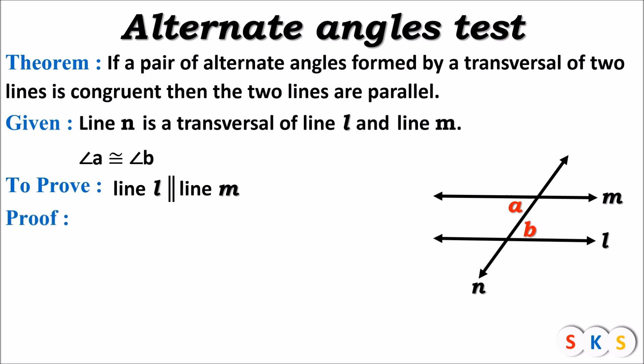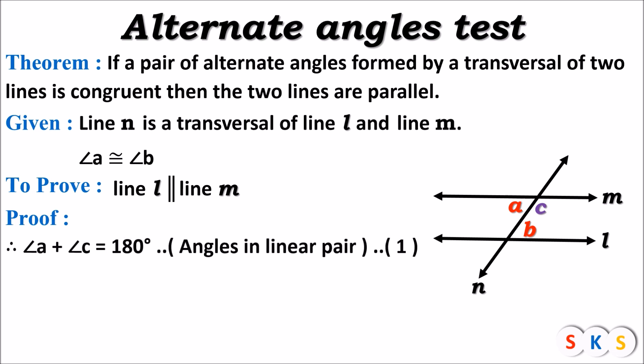Now look at this figure — I am going to take one angle as c. You can see that I have taken one of the angles as c. Now look at the proof: angle a plus angle c equals 180 degrees, because they form a linear pair. That is equation number one.